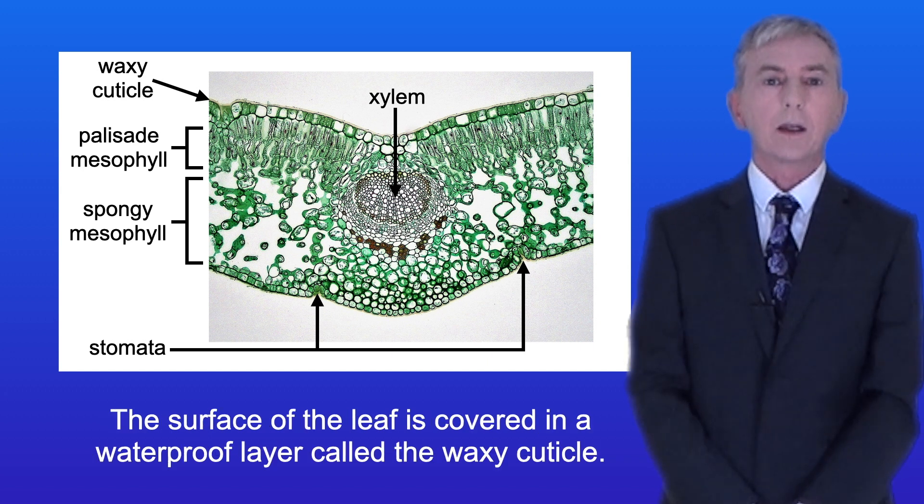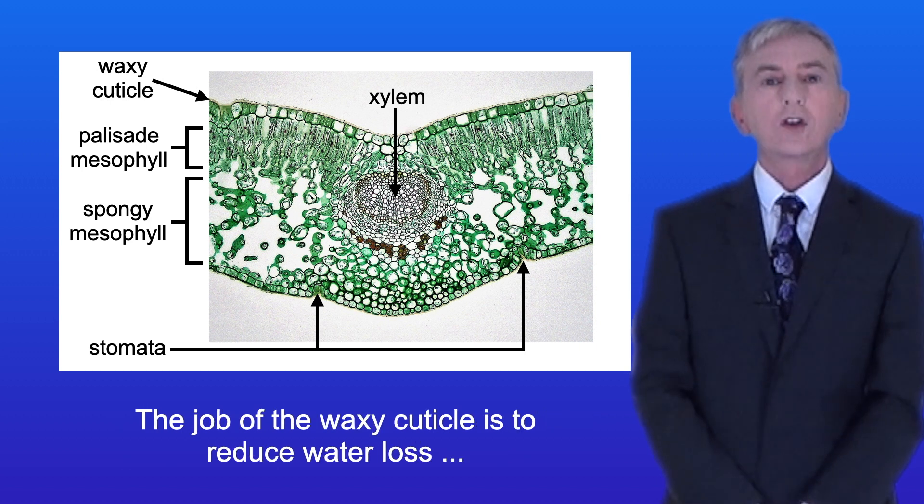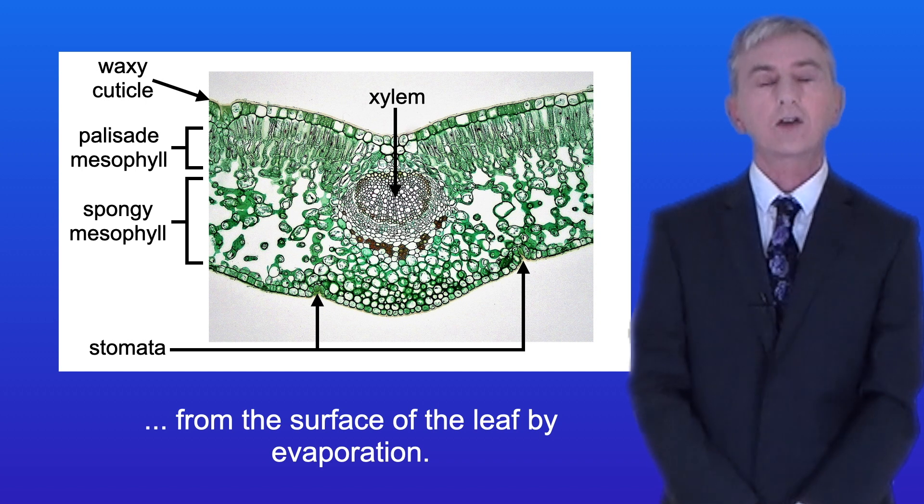Now the surface of the leaf is covered in a waterproof layer called the waxy cuticle and the job of the waxy cuticle is to reduce water loss from the surface of the leaf by evaporation.